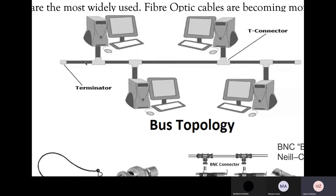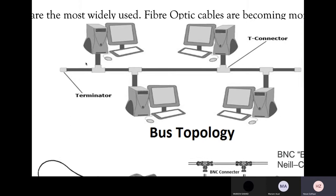In reality the backbone cable is thicker as opposed to the branch cable — the diagram may not reflect that accurately. This branch cable connects a terminal with the backbone cable through a device known as the T-connector. All computers and terminals — including printers — that are connected to the main cable are connected through the T-connector.